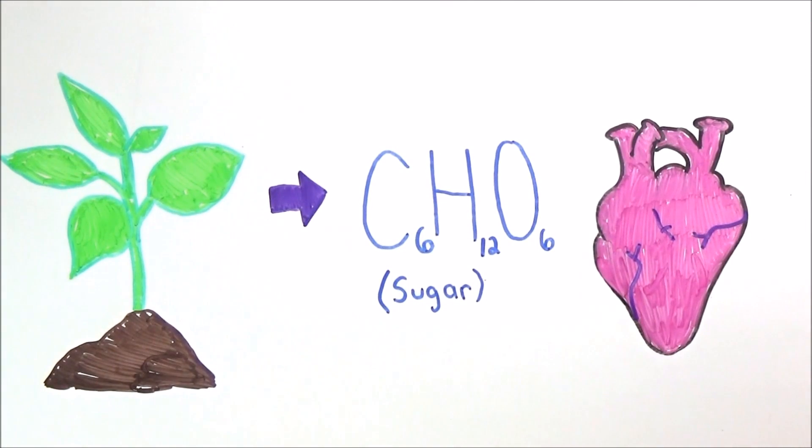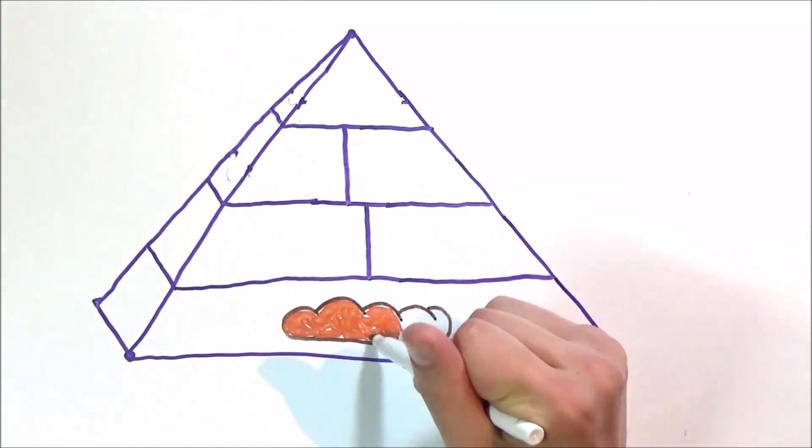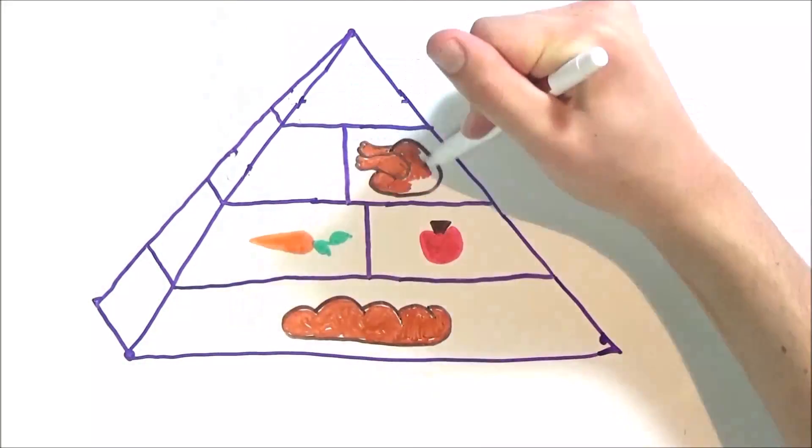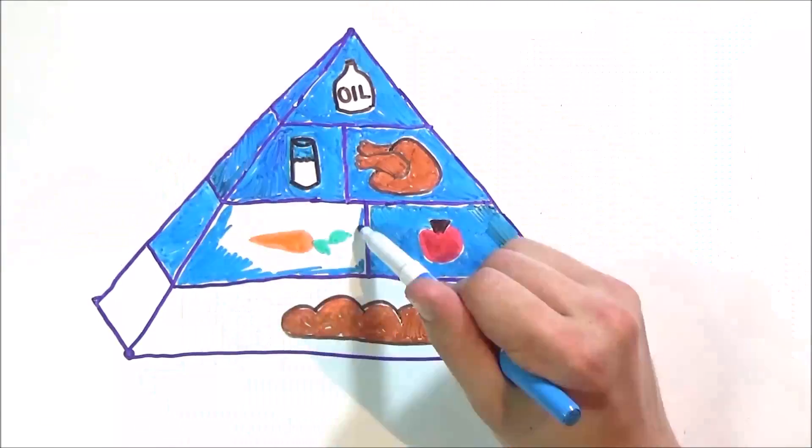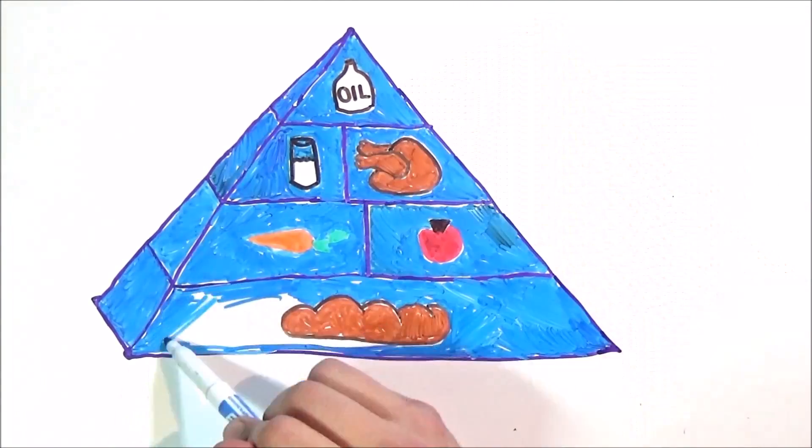However, as omnivores, we have also evolved to eat a varied diet. The United States Department of Agriculture outlines a pyramid of foods part of a complete diet, starting from the largest portion of grains and ascending into smaller portions of meats, veggies, fruits, dairy, and fats.